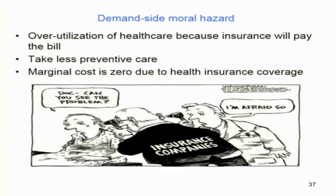To summarize simply, both demand-side and supply-side moral hazard can be identified in the insurance market. On the demand side there is over-utilization of healthcare because insurance will pay the bill. The second is taking less preventive care because you are covered with health insurance. The marginal cost is zero due to health insurance coverage.